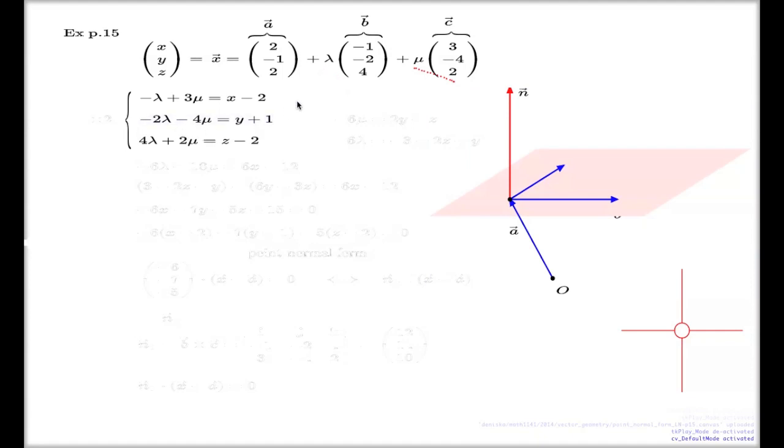So after we've done this, the method of converting the vector form of the plane into the Cartesian form says, now we choose wisely here. We choose wisely which of these two equations we solve for λ and μ. I think I chose the last two, these two. So if I choose these two, I can do like this. I can multiply my second one by 2 and add this to the third one. If I do that, the presence of λ will disappear, right? Because it will be negative 4 plus 4. λ is gone.